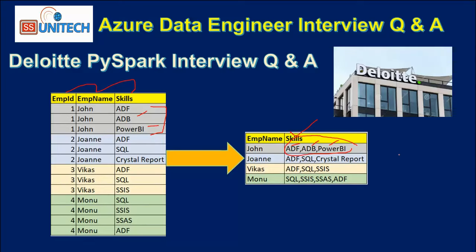Inside SQL we have a function called STRING_AGGREGATE. By using that function we can simply specify the comma and the skills column to achieve this result.